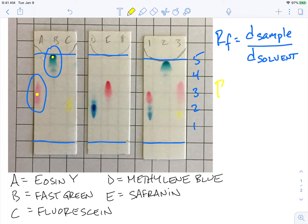So if I was going to do my RF value for sample A, the Eosin Y, I would—so again, our solvent front, if we count up. Let's see. Whoops, I did that wrong. Let me undo that. So we would have one, two, three, four, and five.